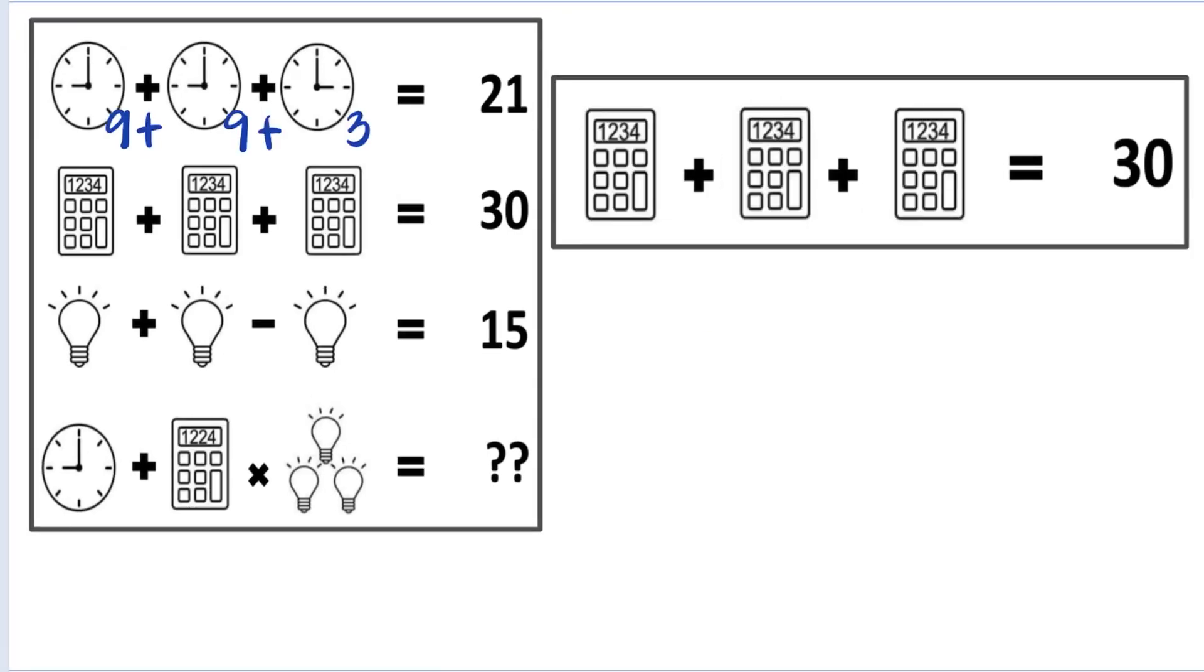Now let's continue with the second line. Three identical calculators added together is equal to 30, which means that each of these calculators has a value of 10. So we have 10 plus 10 plus 10 is equal to 30.